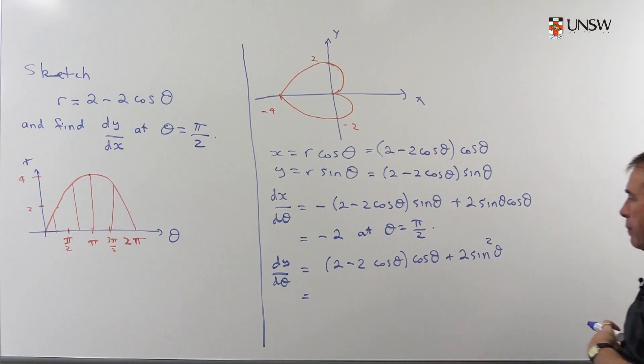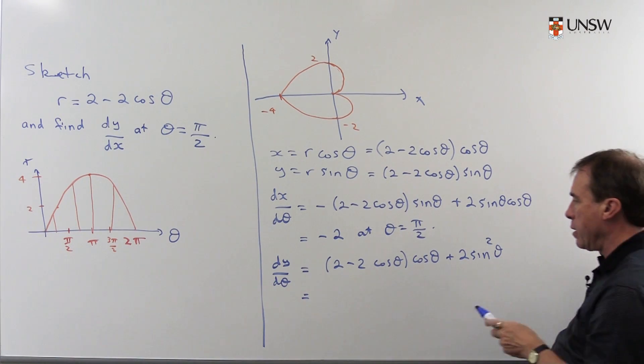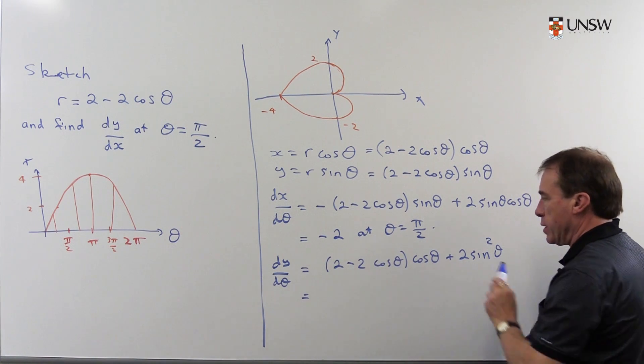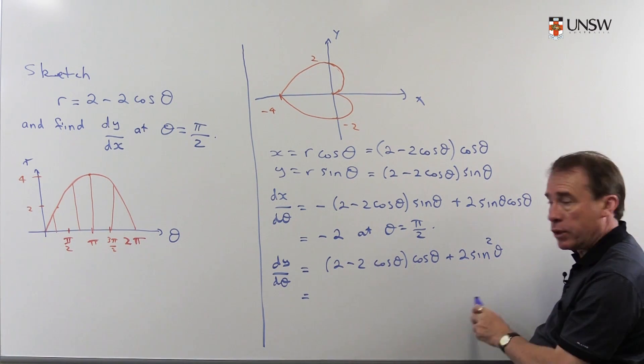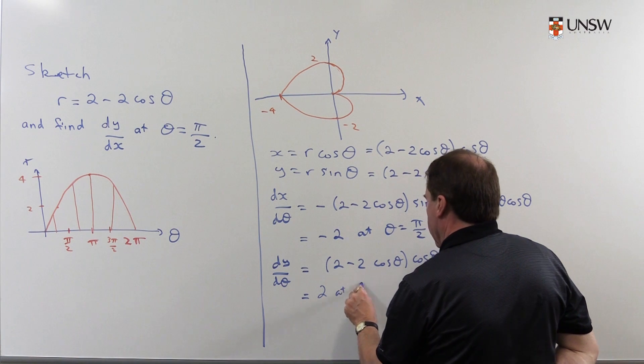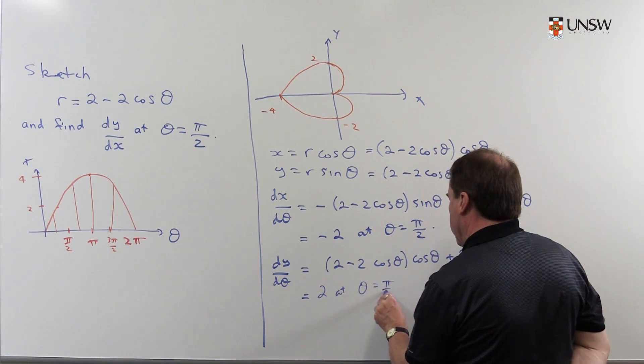Now when I put π/2 in, then this term will all be 0, and this is going to give me 2. So this is 2 at θ = π/2.